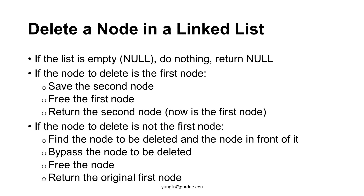In the third case, the node to be deleted is not the first node. We need to find the node and the node in front of it. The link needs to bypass the node to be deleted, then free the node. Finally, return the original head of the linked list.